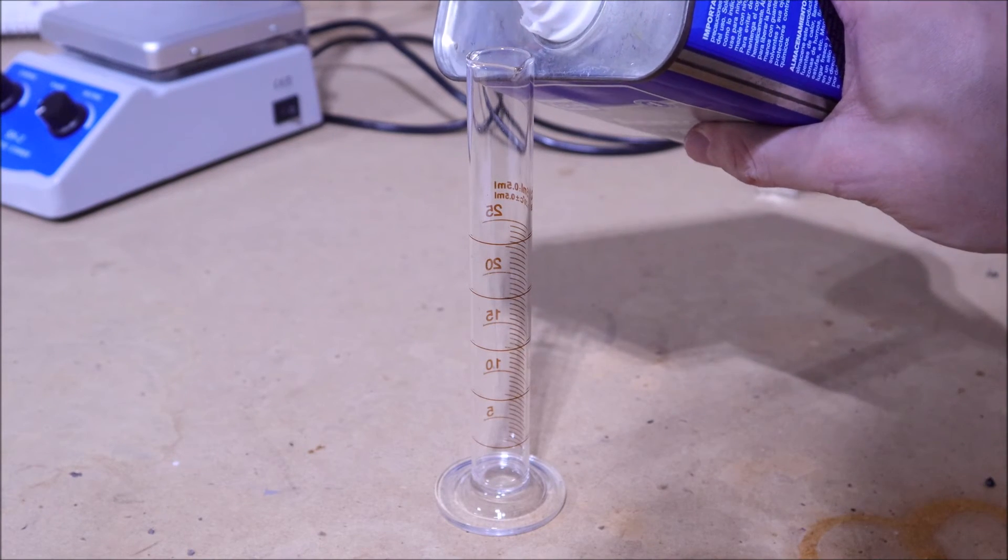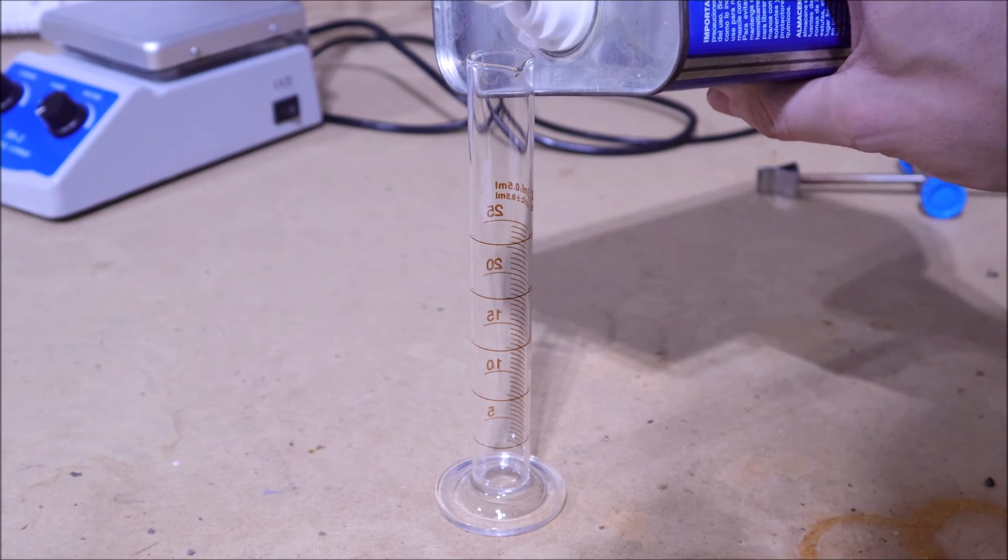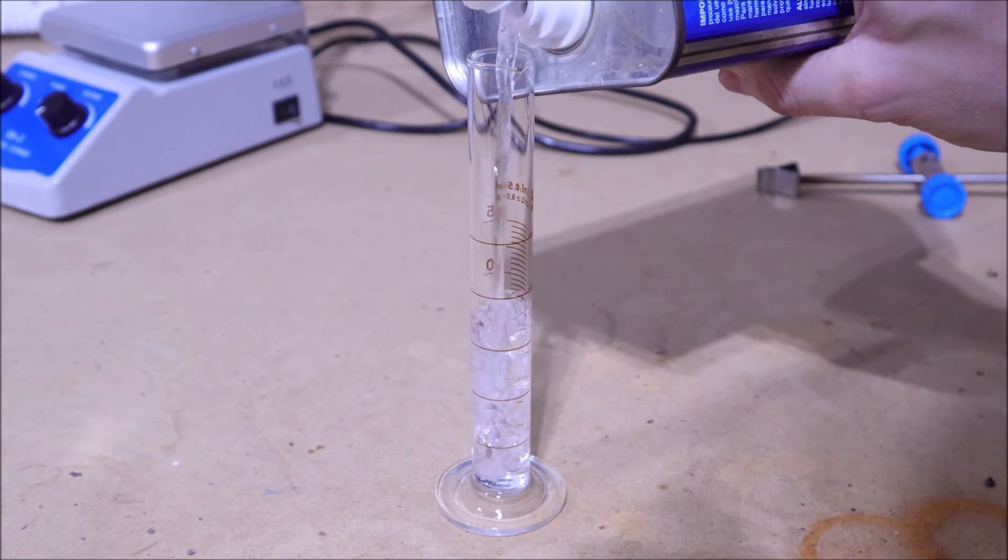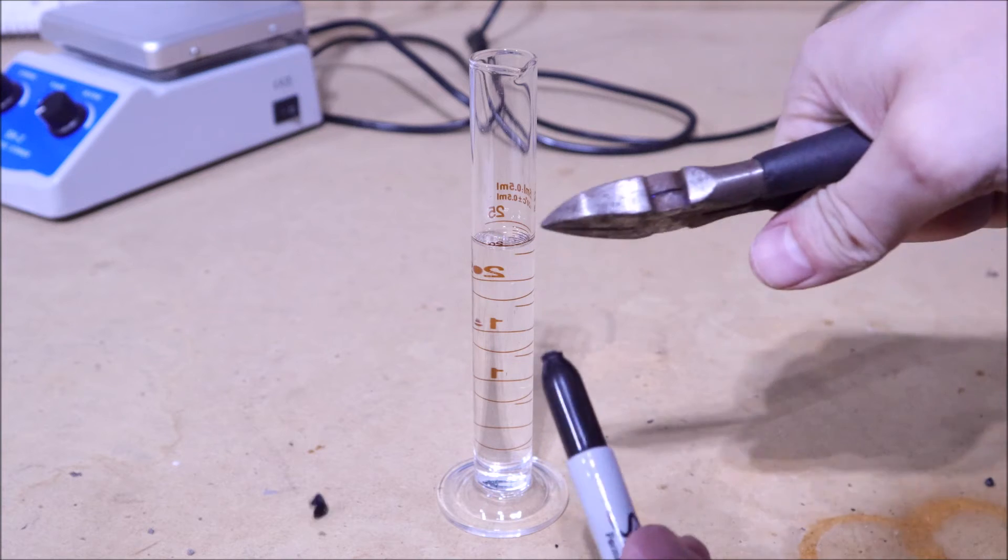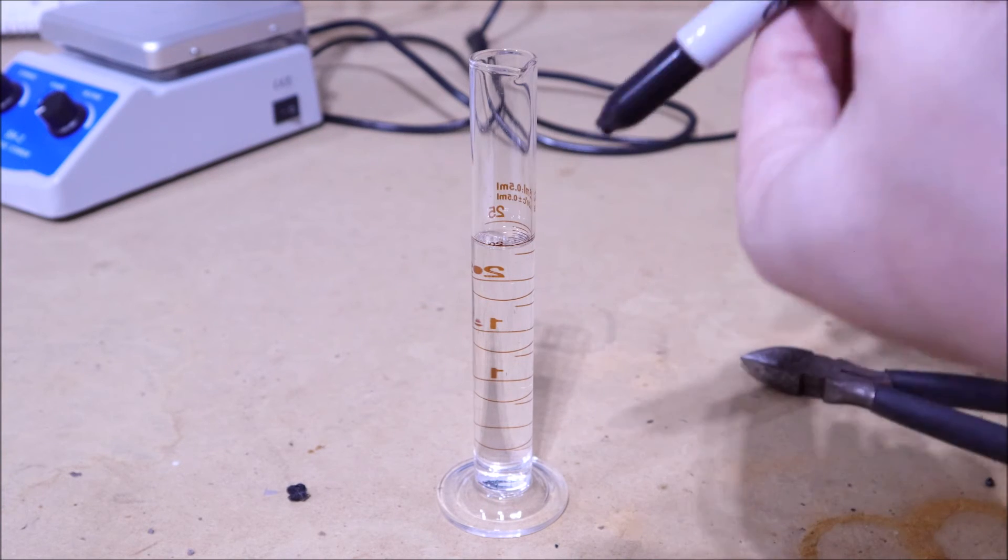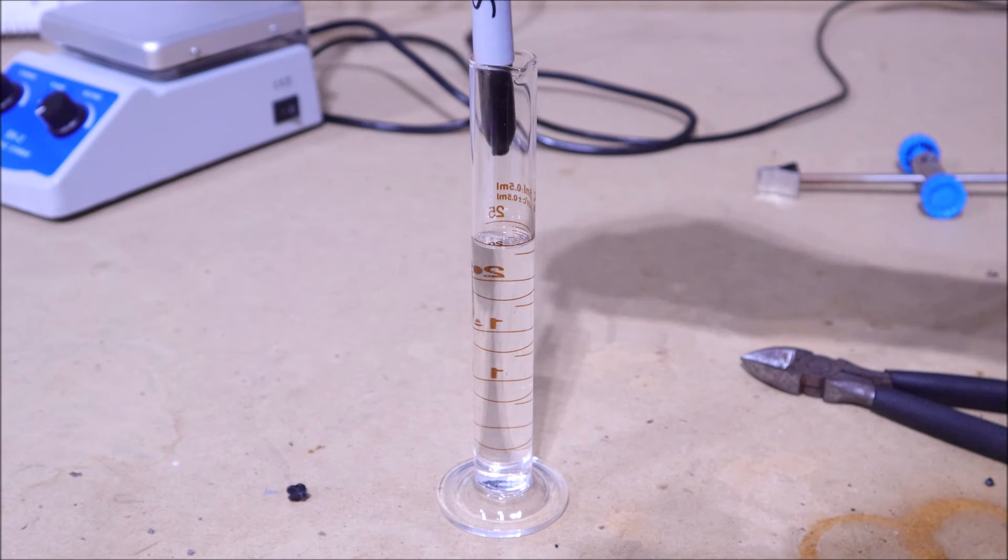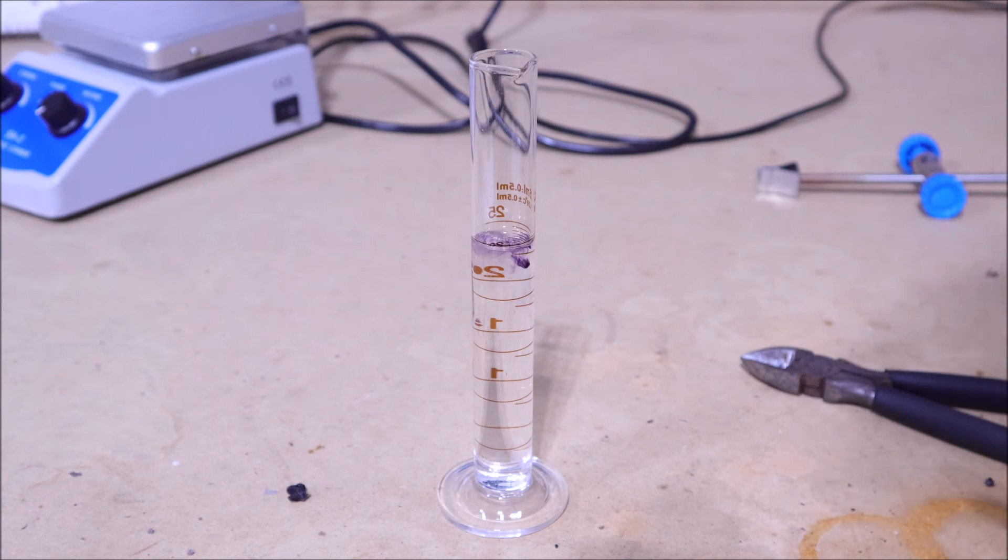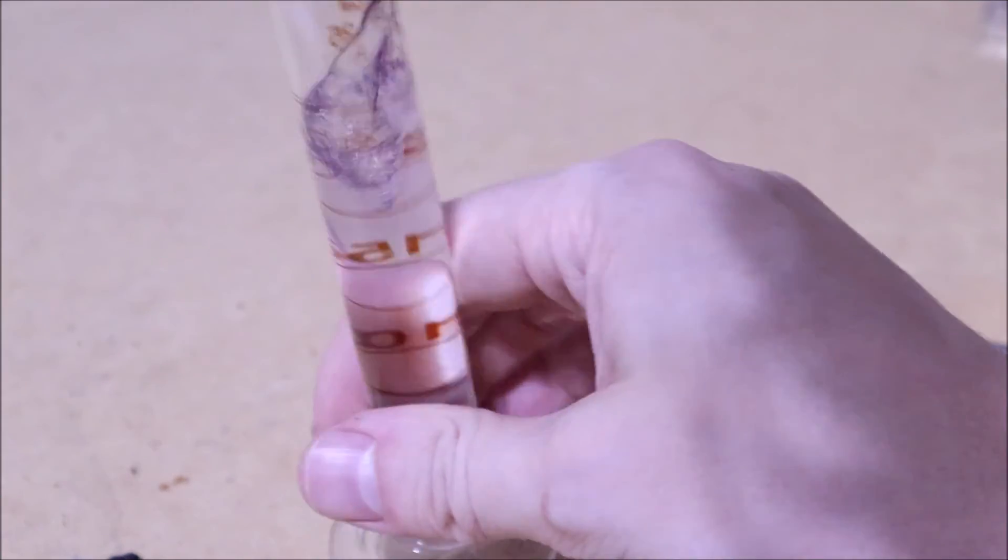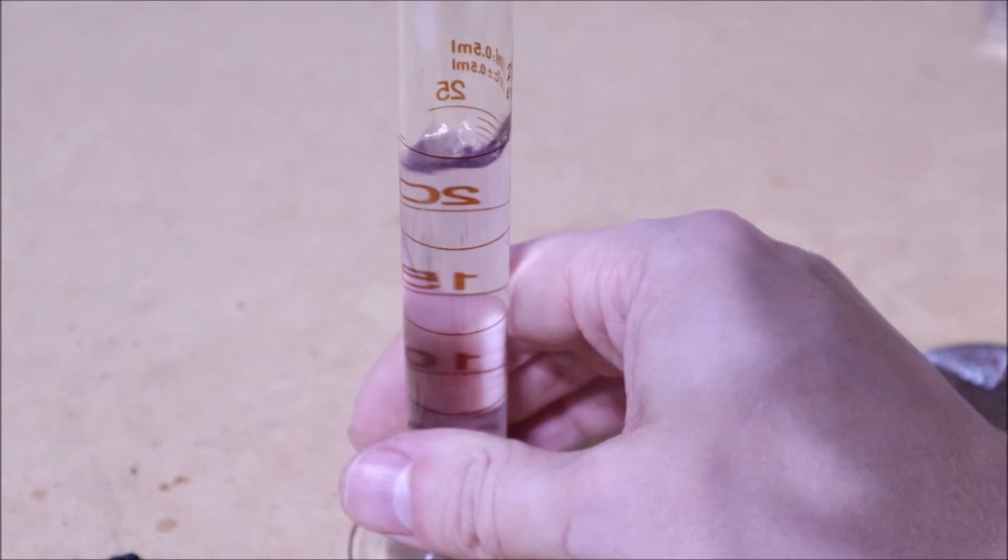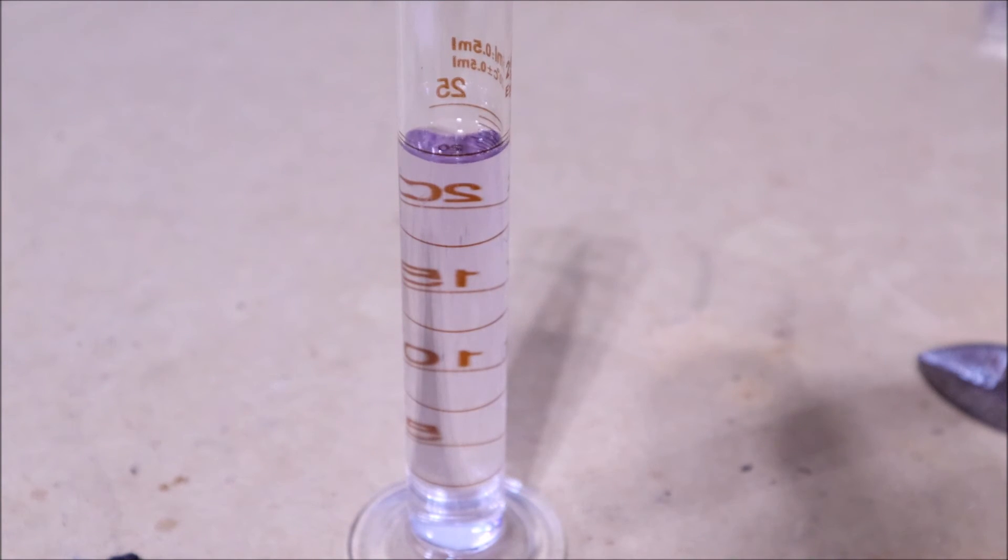And to further show that the ink requires acetone or like an organic solvent to be dissolved into a pen, I poured acetone into this graduated cylinder, and I just dipped the broken off piece of the Sharpie into that to show how easily that purpley black ink can be dissolved in there. Pretty easy.